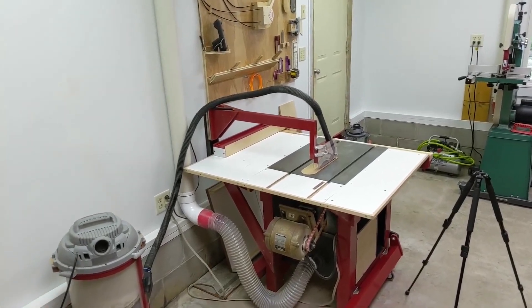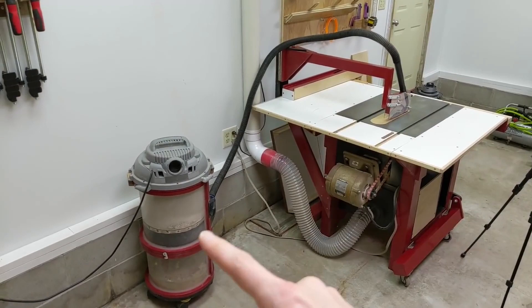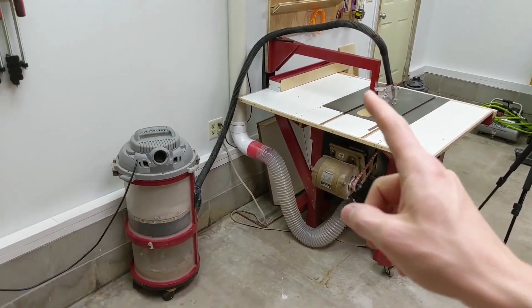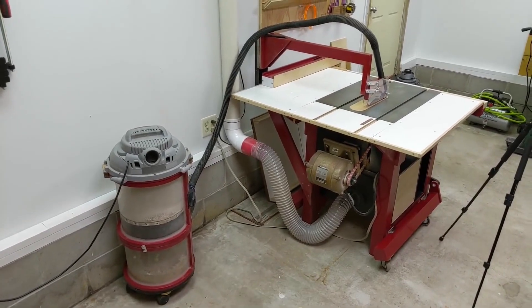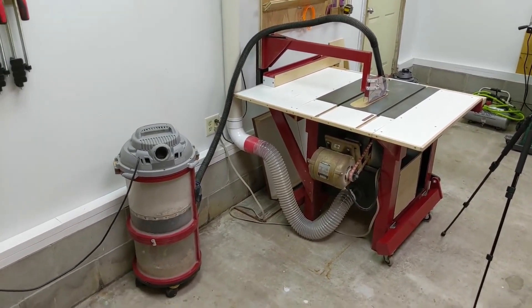The only downside with this setup is that I've always got to have my shop vac hooked up to the overarm dust collector, and that means it's always out on the floor. The hose is out and the cord is out and they're always just getting in the way.